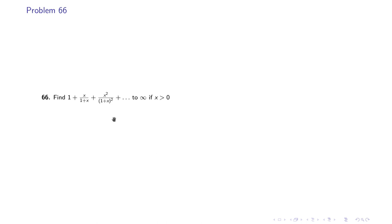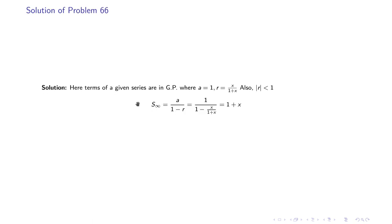Problem 66: Find the sum of the series 1 + x/(1+x) + x²/(1+x²) + ... up to infinity, where x > 0. The first term is 1 and the common ratio is x/(1+x). Since x > 0, the modulus of r is less than 1, so the sum of infinite terms is 1 / (1 − x/(1+x)), which simplifies to 1 + x.